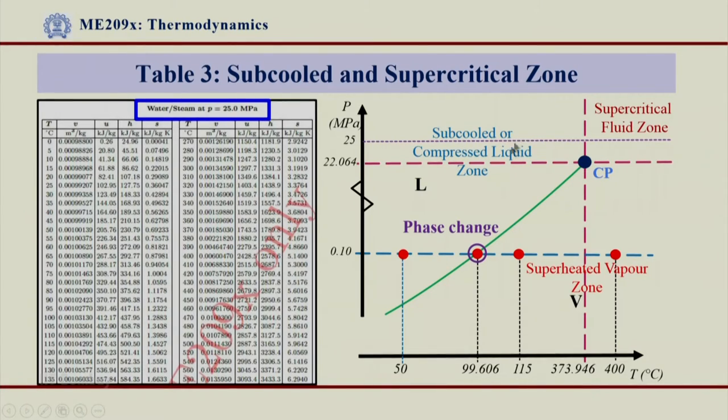So, I am at 25 MPa in a subcooled compressed liquid zone and if I go on increasing temperature now here from 0 degree centigrade to 1000 degree centigrade I will not come across this LV saturation line, that means I will not have a corresponding value of T_sat_p over here.